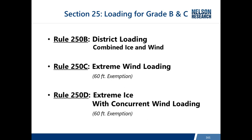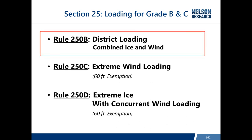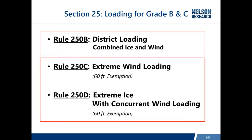In Section 25, covering loading, there are three different load cases. Rule 250B is the district loading, which applies to poles of all lengths and is defined as combined ice and wind loading — most distribution is governed by Rule 250B. When poles are taller than 60 feet above ground, Rules 250C and 250D also need to be considered. Rule 250C is extreme wind with no ice, whereas 250D is extreme ice with concurrent wind.